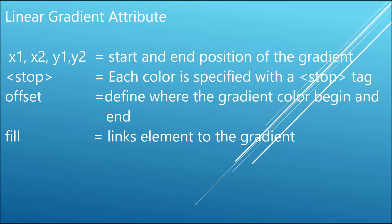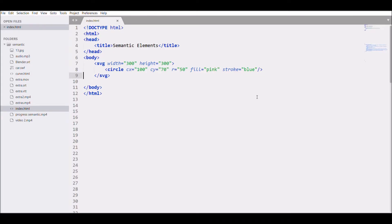Let's start by discussing linear gradient first. Linear gradient has attributes x1, x2, y1, and y2, which are the starting and ending positions of the gradient. For giving a color you need a stop tag, and you need to define offset — that defines from where the gradient color will begin and end. The fill attribute is for linking the gradient to the element, like a circle.